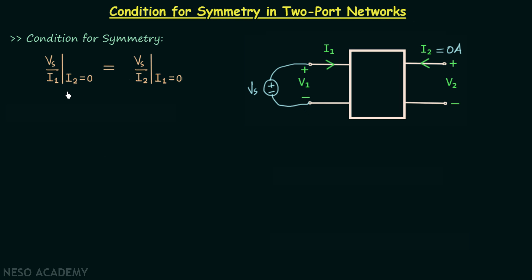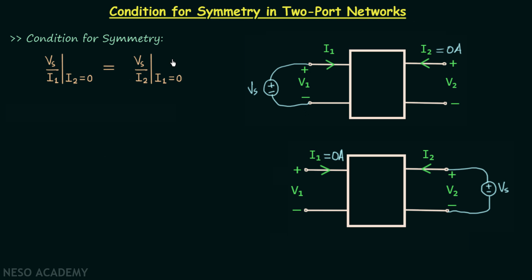For the right-hand side, we take the same two-port network and the same voltage source, but this time connect the voltage source between the two terminals of port 2 and open-circuit port 1. We then calculate the ratio of excitation to response. Excitation is Vs, the response is I2, and I1 = 0 signifies port 1 is open-circuited — this is the defined circuit condition.